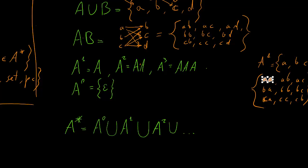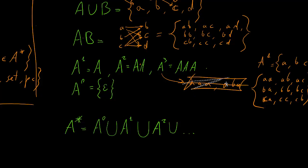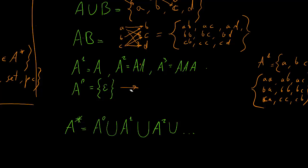As you can see, if A is an alphabet, A to the 2nd gives you all strings of length 2 from that alphabet. A to the 3rd is all strings containing three symbols from A — A, A, A; A, A, B; and so on. Special case: A to the 0 is equal to the set containing the empty string — the string which has length 0. This is by convention, but it's important, so remember it.